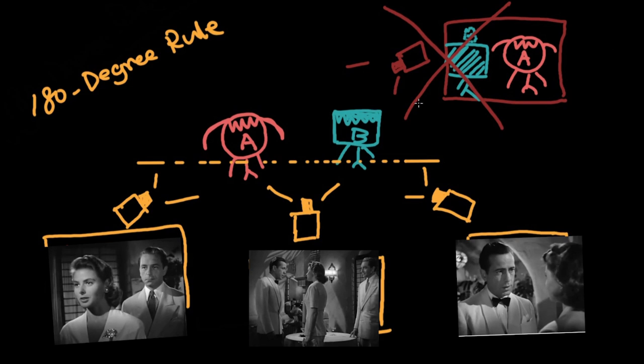If the camera crosses the line, the original screen position of the characters is reversed. Nowadays, we can still find classical style in Hollywood. And after watching this video, you can analyze your favorite film by yourself.